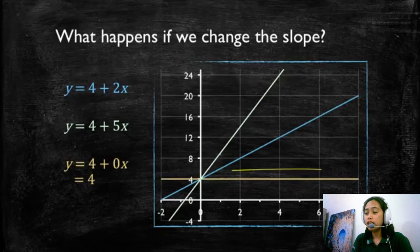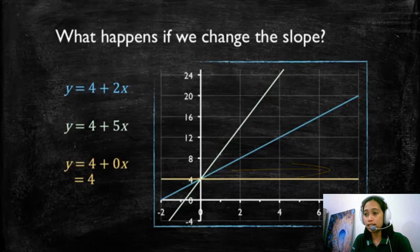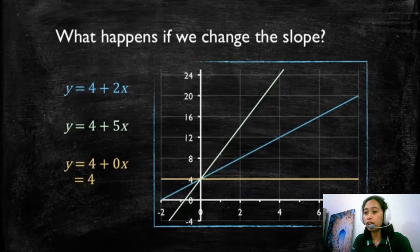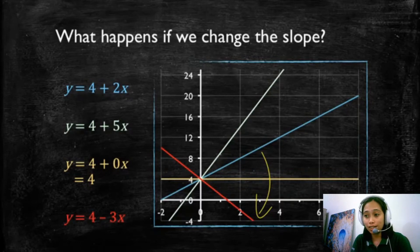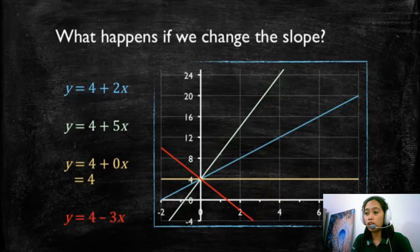So what would happen if we had a 0 slope? So this would mean that it doesn't matter what value X has, Y will always be 4. And if you go all the way around to a negative slope, minus 3 in this case, we have a downward slope and this represents that Y would decrease 3 units for every unit of X.